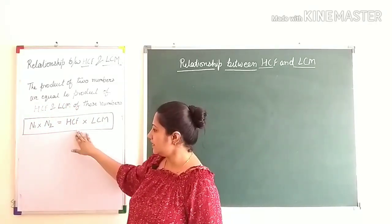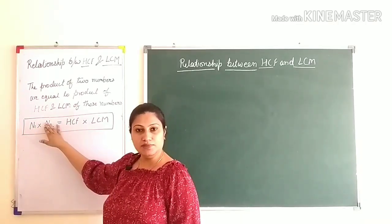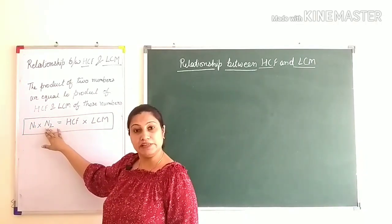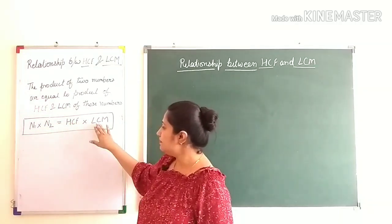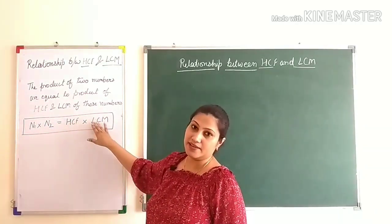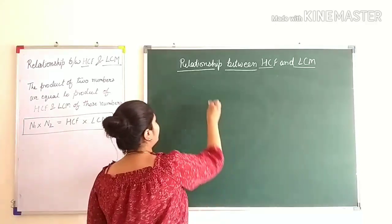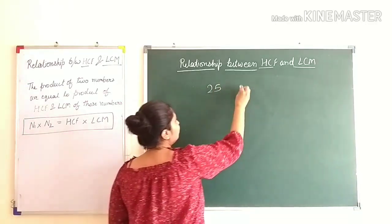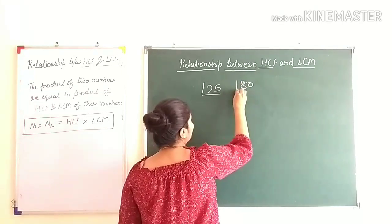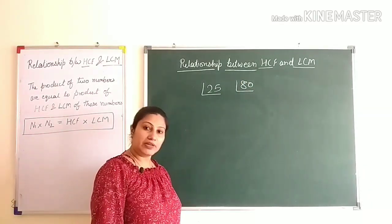Here you can see N1 and N2 — these are the two numbers. If we multiply these numbers, the answer will be equal to the multiplication of HCF and LCM. Let's see an example. We will work with 25 and 80, using the method of prime factorization.